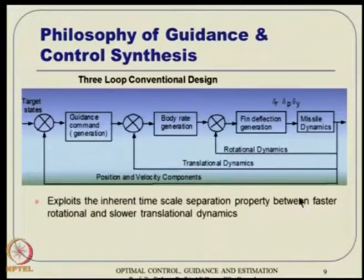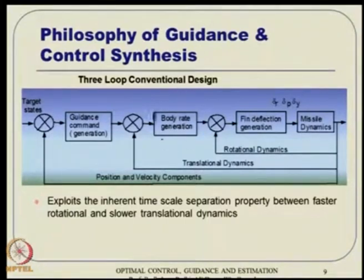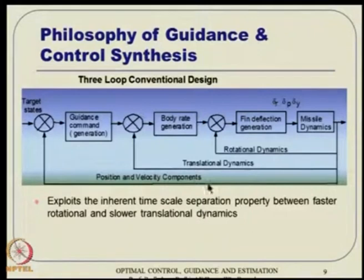This approach exploits the inherent time scale separation property. When talking about guidance, we do not worry so much about body attitude — what matters is taking the vehicle from point A to point B. That is the guidance problem in a point mass sense. Body rates are typically fast dynamics, whereas velocity vector level (U_dot, V_dot, W_dot) equations are slow. This time scale separation between faster and slower dynamics is retained here, which is very nice and gives relatively easy tuning.